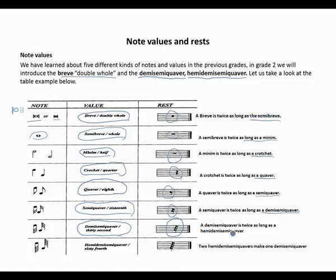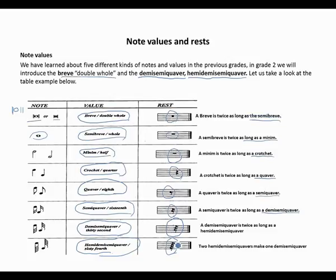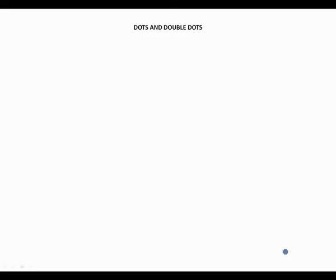A demi-semi-quaver is twice as long as a hemi-demi-semi-quaver. The hemi-demi-semi-quaver is half of a demi-semi-quaver, which is a 64th note. This has four flags and one straight line going down. Two hemi-demi-semi-quavers make one demi-semi-quaver.